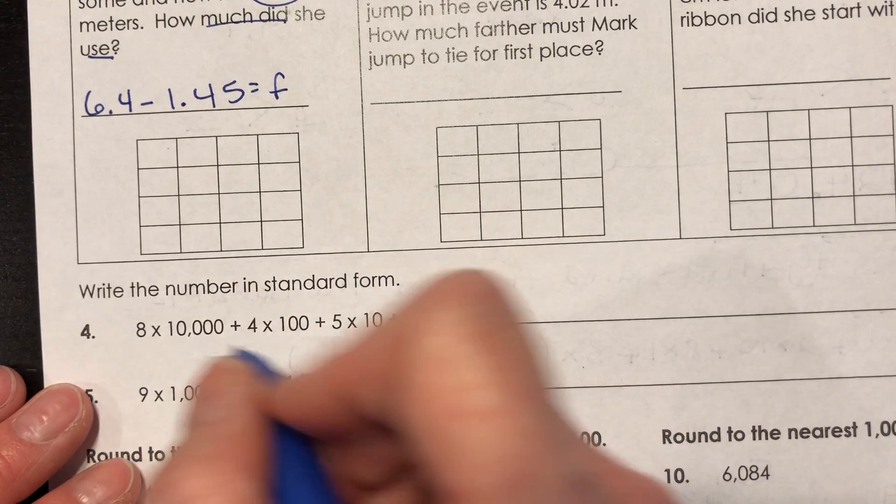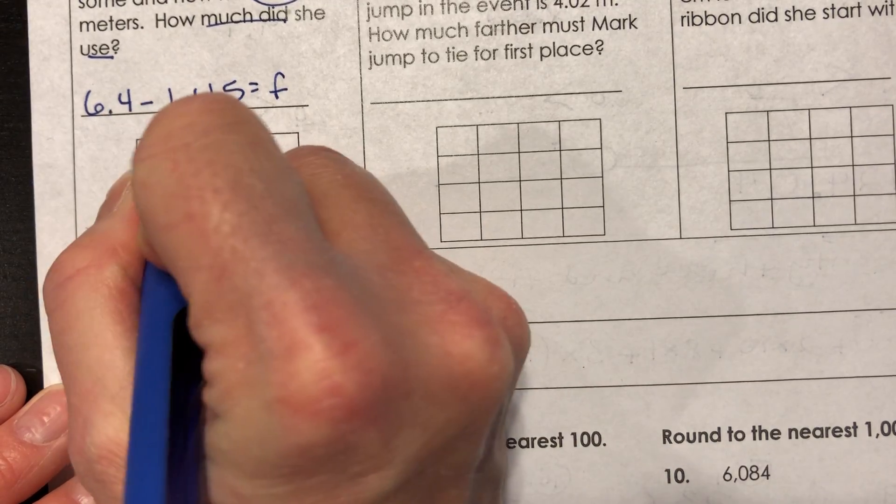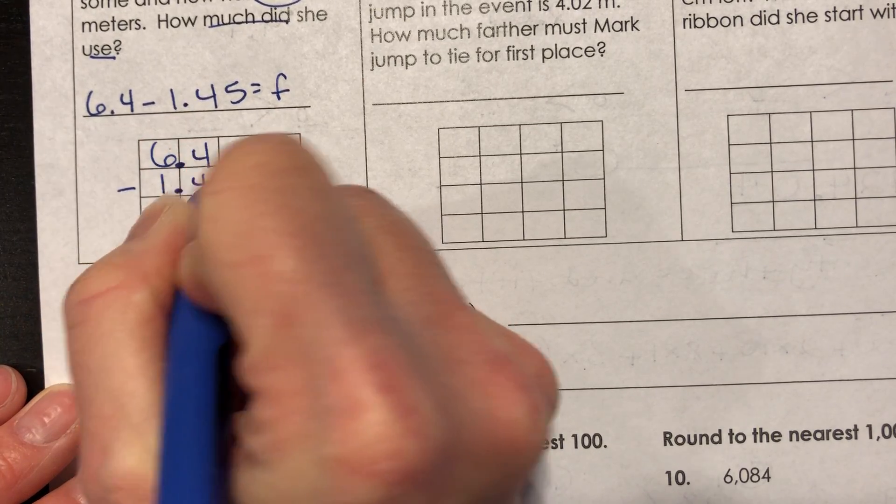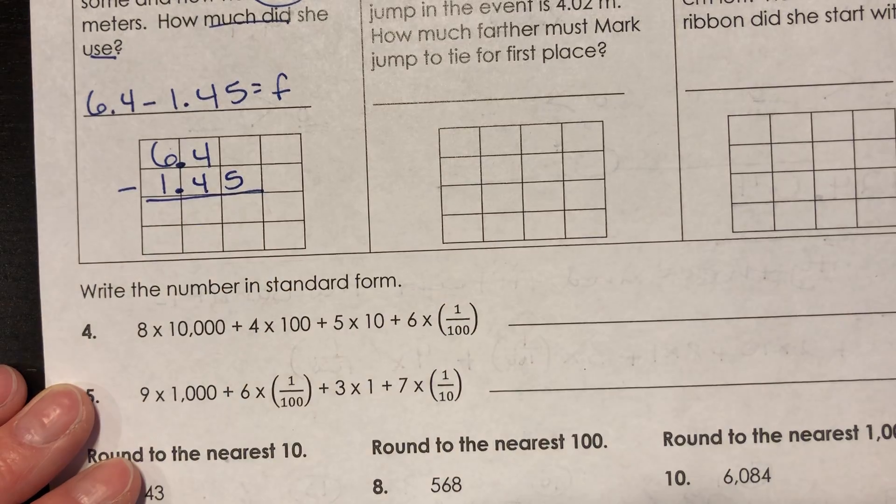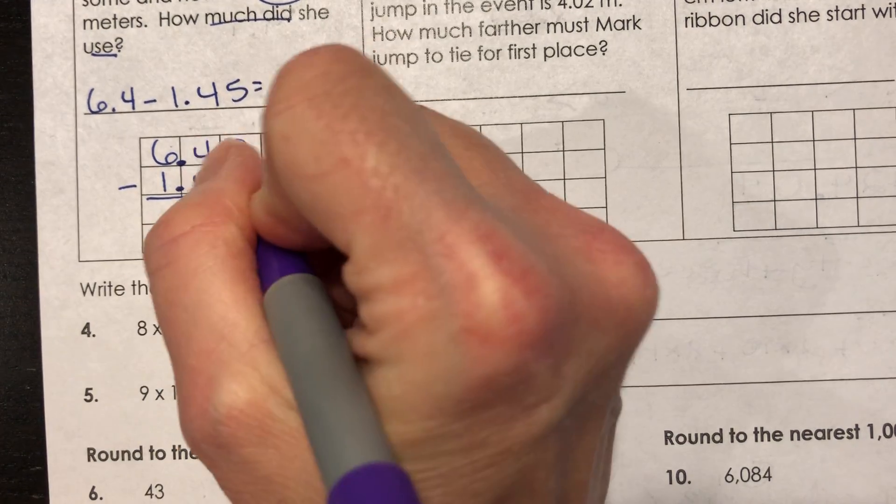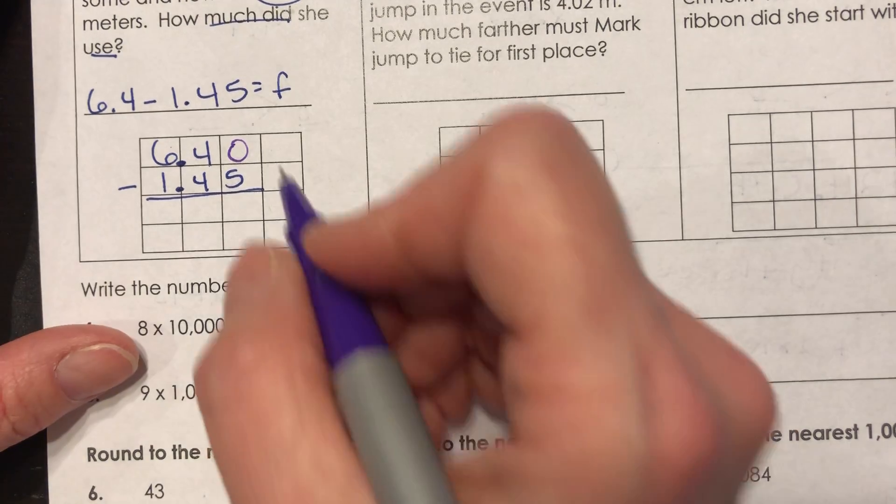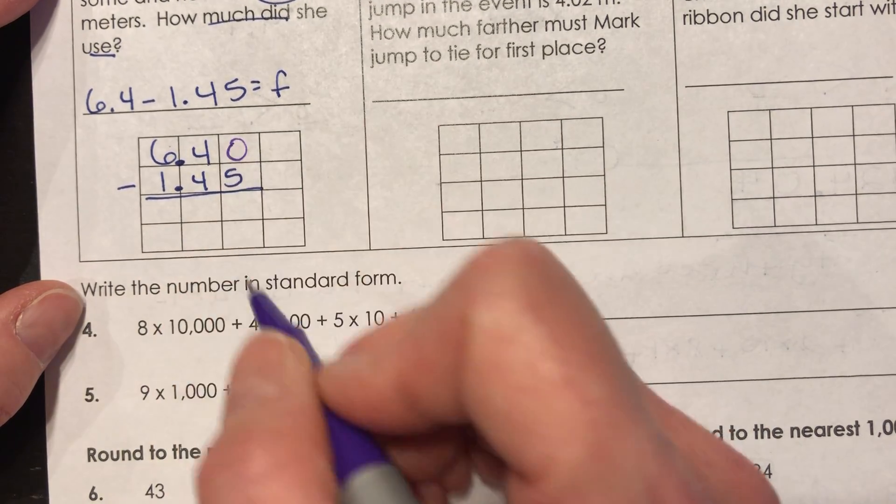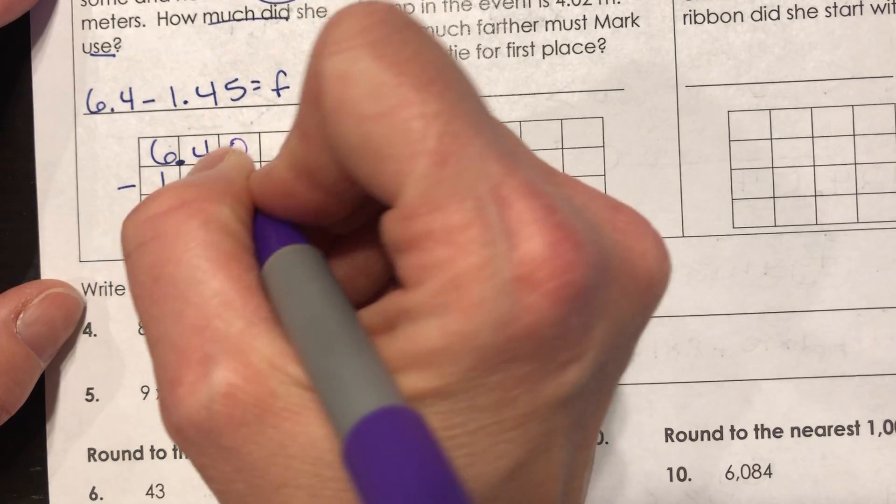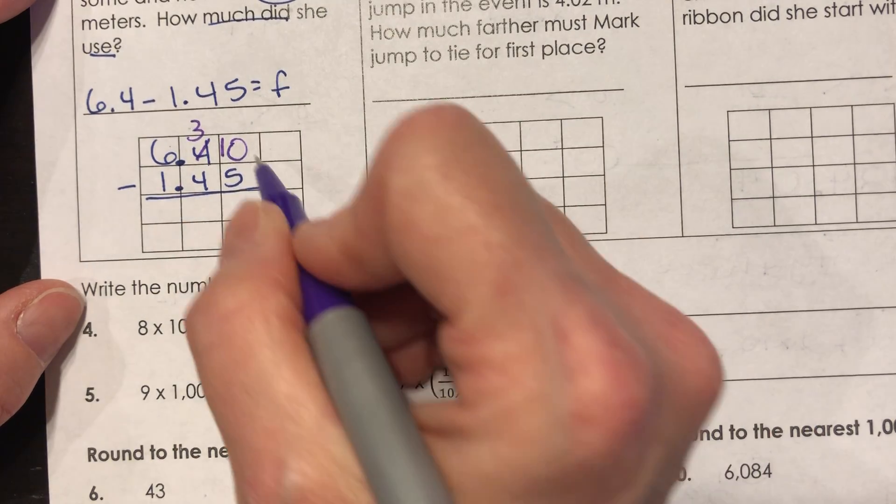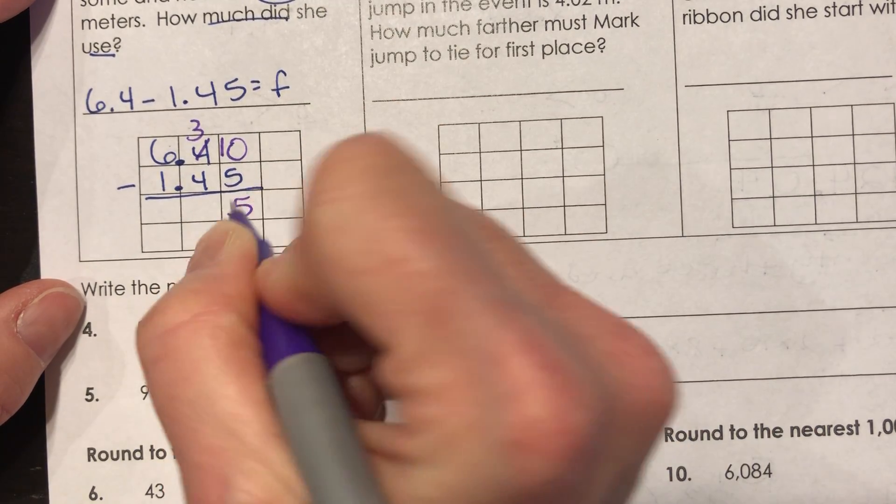So this would be a subtraction. We would want to take 6.4 minus 1.45 to get the amount of fabric. So let's do that. I'm gonna write in my 6.4 minus 1.45. Notice the decimal points are totally lined up because they should be. I'm gonna put my zero above that five because I have to, because I can't take five away from nothing. And this makes it more obvious to see that I am trying to. I need to borrow from this four then. That becomes three and now I have 10.